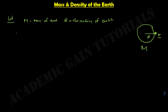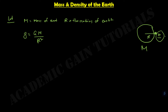We know the value of g, the gravitational acceleration, g equals GM divided by R squared. So this object m has a gravitational acceleration of GM over R squared.